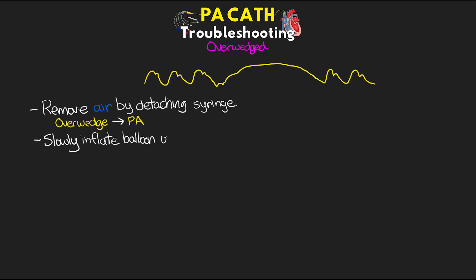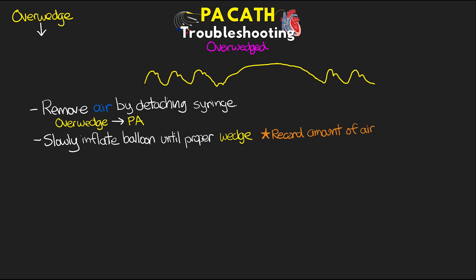We want to slowly inflate with air until we get a proper wedge, and we want to record the amount of air that it took to get to that point, because we then want to stop putting in air once we see that proper wedge waveform. This is really important to prevent overinflation of the balloon in the pulmonary artery, as doing so could actually lead to pulmonary artery rupture, which is a life-threatening emergency.